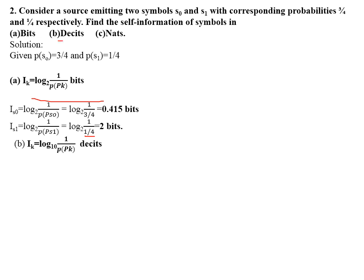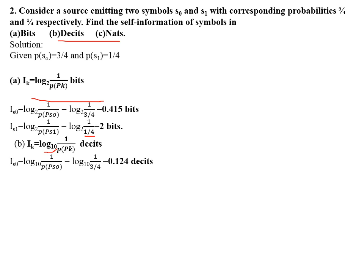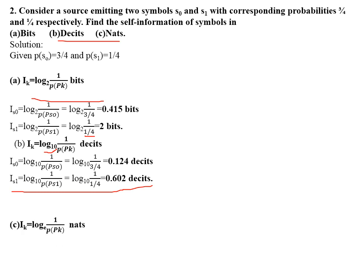For information in decibels, the base should be 10. Using I(k) = log₁₀(1/p(k)): substituting P(S0) = 3/4 gives I(S0) = 0.124 decibels. For symbol S1, substituting P(S1) = 1/4 and base 10 gives I(S1) = 0.602 decibels.